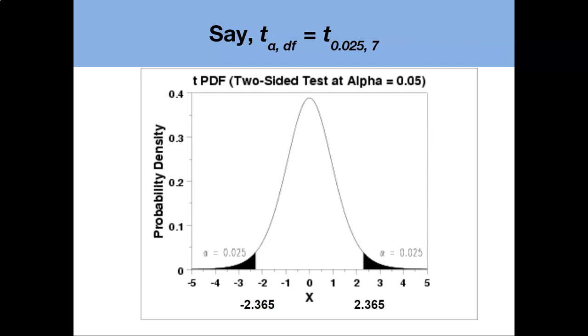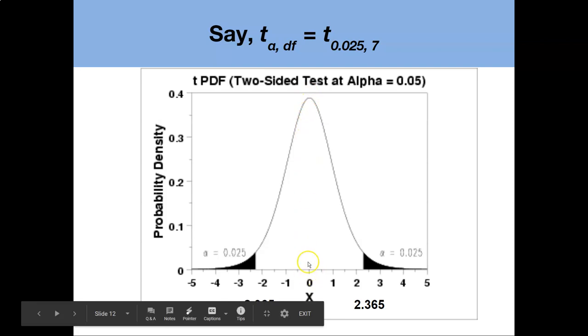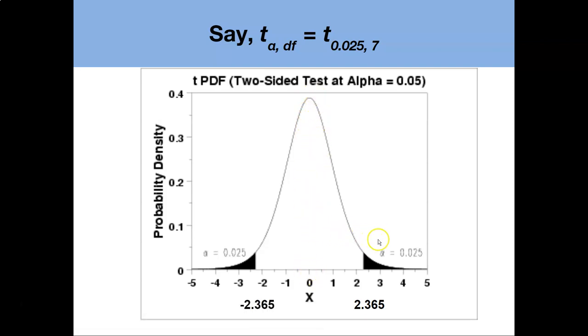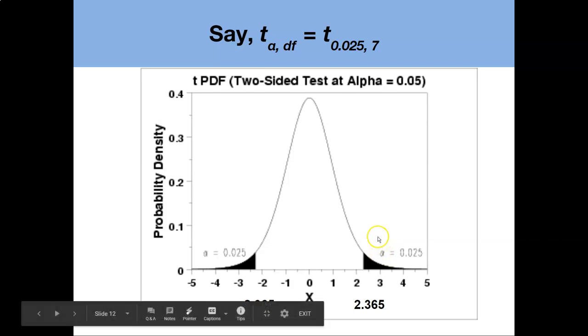So we can use the t distribution to look at different areas of the curve where interesting values start to happen. For example remember the mean of the t distribution is centered around zero. But as we move further into the tails of the distribution we can have different values. For example we can look up a value of two point three six five.